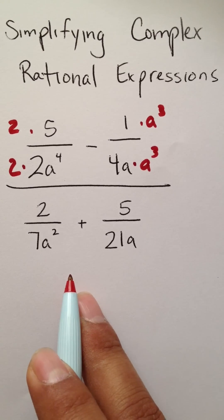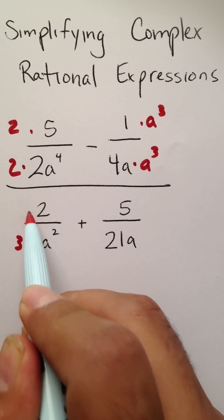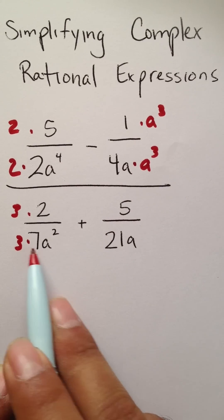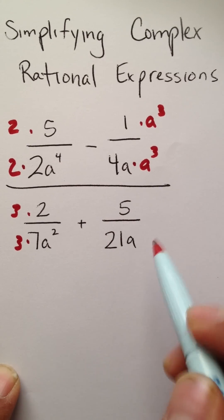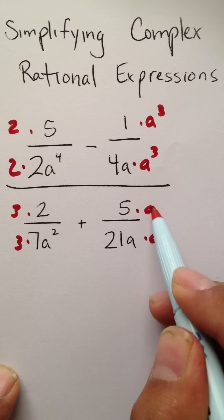You can come down to your denominators and do the same thing. If I multiply this by 3 and this by 3, I would now have 21a squared. The only way to match that is to multiply this by a and to multiply this by a.